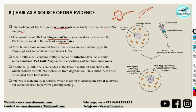Most human hairs recovered from crime scenes are naturally shed, usually in the telogen phase, containing very little nuclear DNA. In this case PCR can be used, or we can turn to mitochondrial DNA. Hair follicle cells contain multiple copies of mitochondria, making mitochondrial DNA a valuable source. Mitochondrial DNA can be successfully isolated from hair roots, especially from naturally shed telogen hairs.